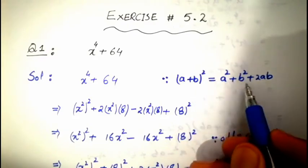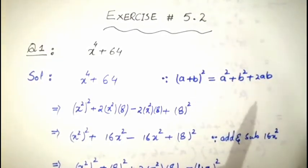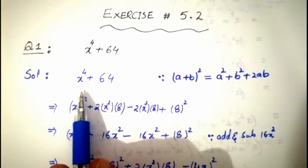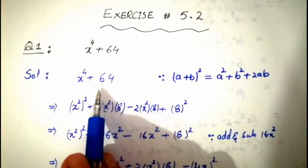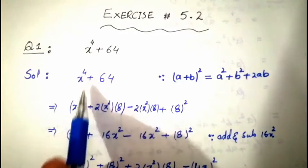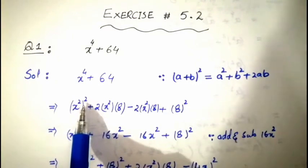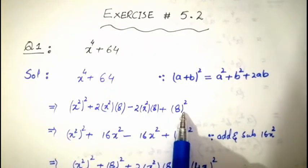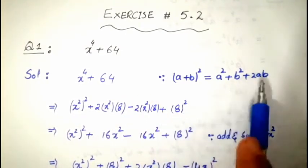(a + b)² equals a² + b² + 2ab. In this question, we need to use completing the square — that is, we need to build the form of this formula. Only two terms are given, so we need to bring a third term from somewhere. x⁴ can be written as (x²)², and 64 can be written as 8². So we have a² and b².